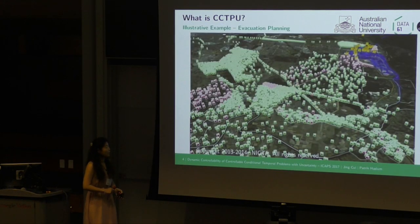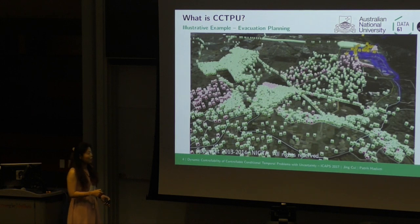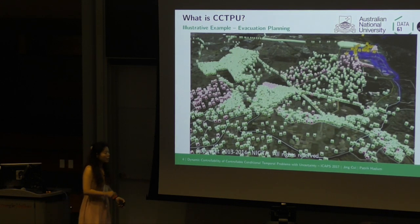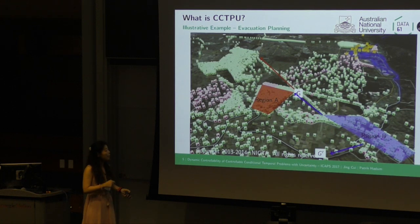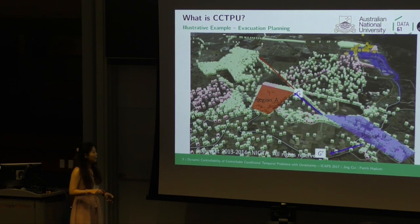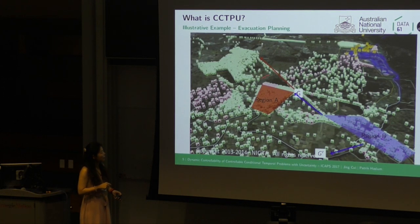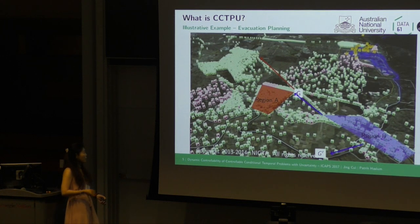For example, in evacuation planning, we need to evacuate the whole city before the flood blocks the road. We divide people into different regions and assign paths to them. Instead of giving a single path, we can give them some options. For region B, they can either go through G after region A, or go through G prime, which is the longer way.